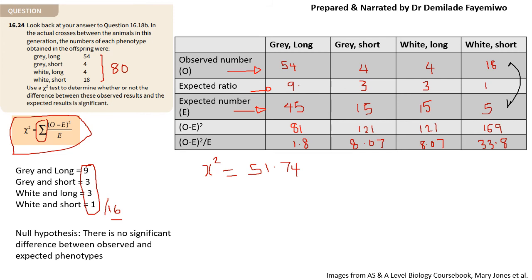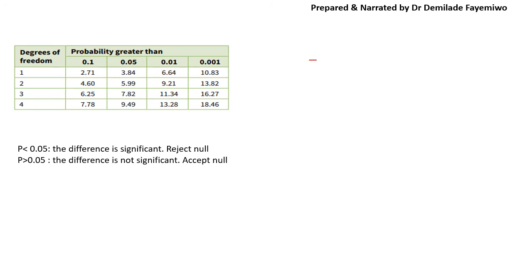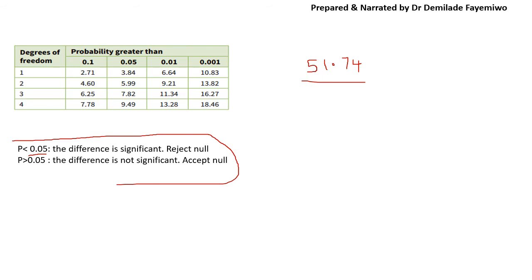This is typically how you get the chi-squared value, but this is not where it ends. We now have a chi-squared value of 51.74. To determine whether there is a significant difference between observed and expected numbers, we use the p-value. The critical point for the p-value is 0.05 — this is the rule that governs how you interpret it.